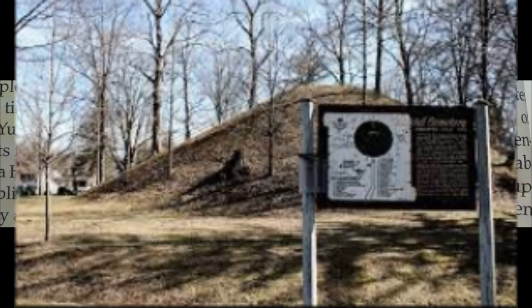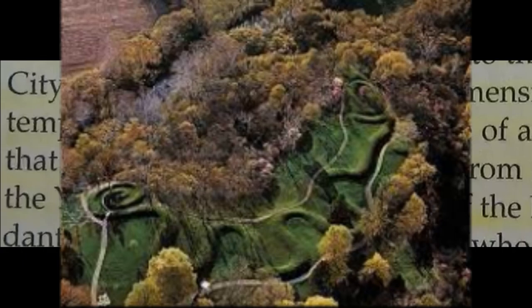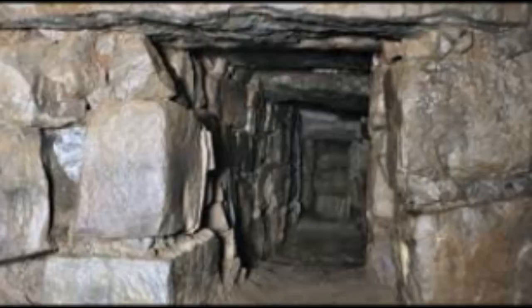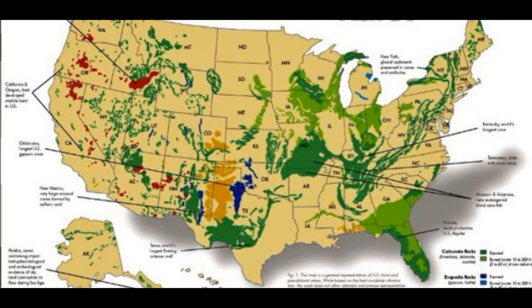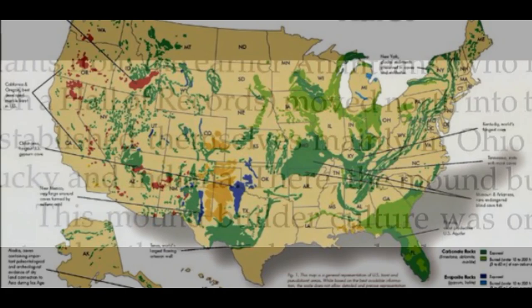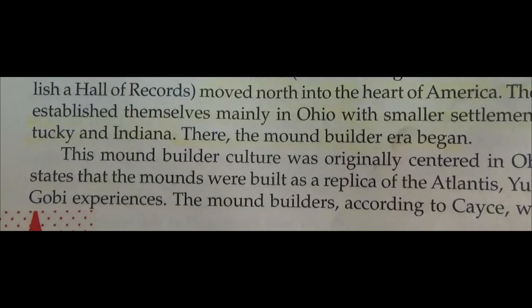These mounds had underground tunnels, and a lot of these tunnels went over a hundred miles out and connected with other tunnels. This might be one of the reasons why Harriet Tubman was able to escape through the tunnels — what they call the railroad tunnels or the mining tunnels. The mound builder culture was originally centered in Ohio. Casey states that the mounds were built as a replica of the Atlantis, the Yucatan, and other experiences.